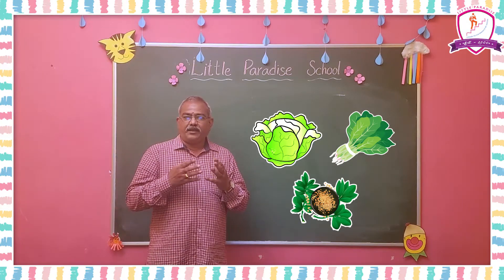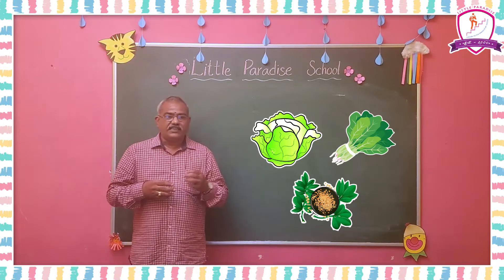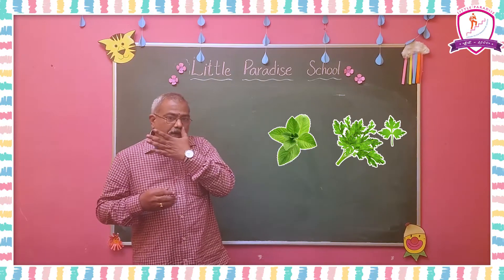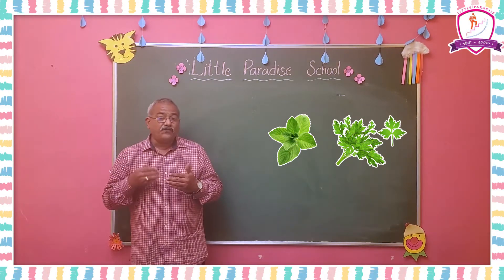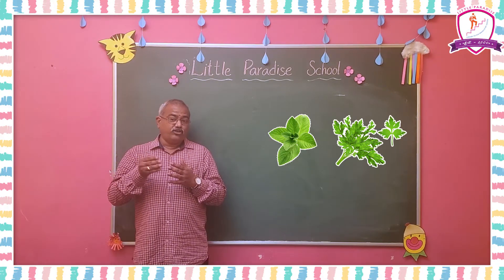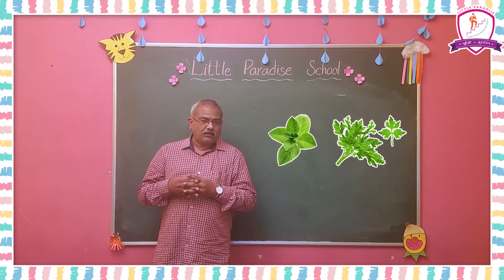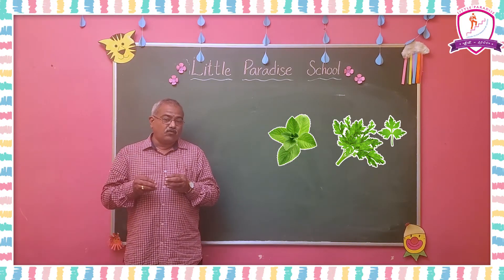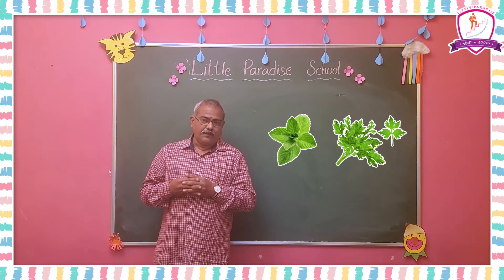Leaves from mint and coriander are used as condiments, meaning flavoring. If you observe your parents cooking, you can see coriander is used as a final topping in every item they cook, because it has great flavor and is also good for health. Leaves are also used for medicinal purposes.